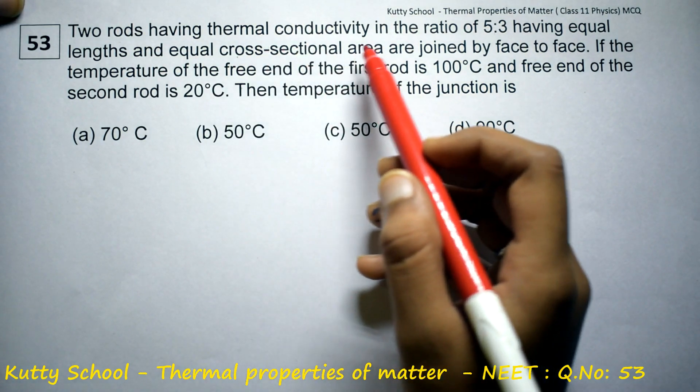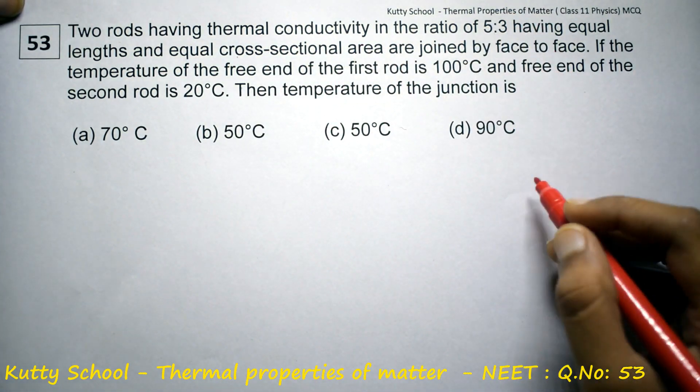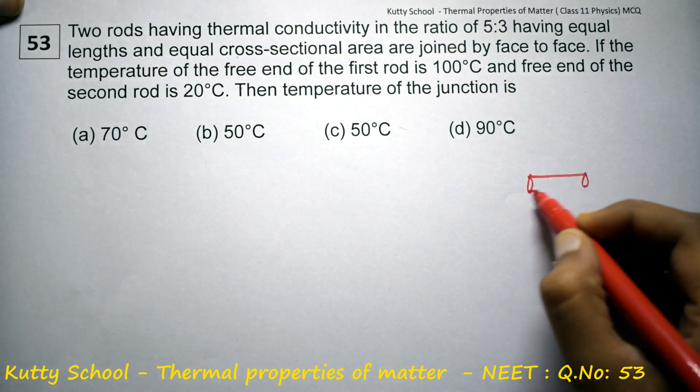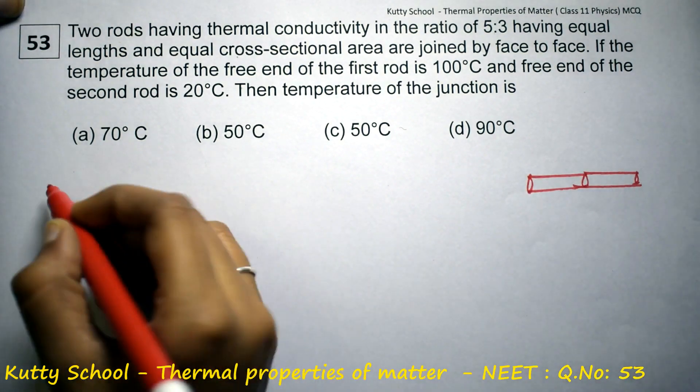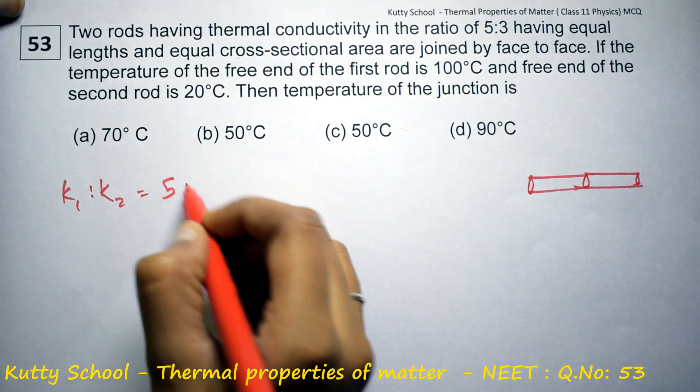Two rods have thermal conductivity in the ratio of 5 to 3. So the thermal conductivity k1 to k2 equals 5 to 3.